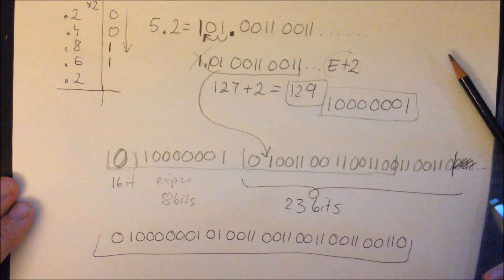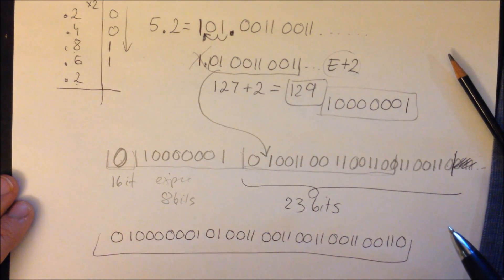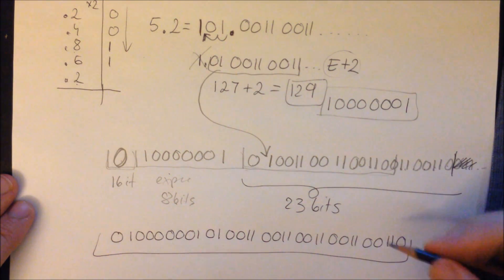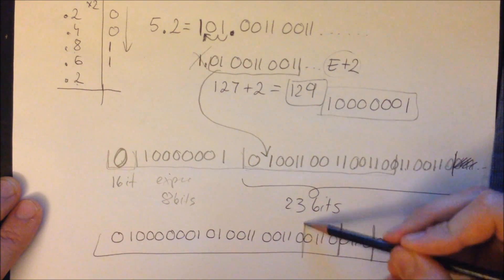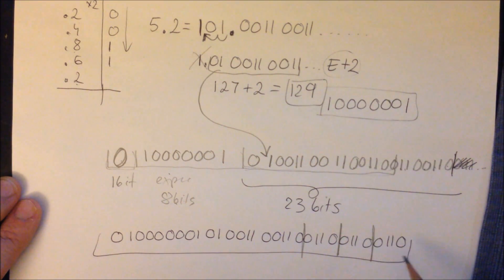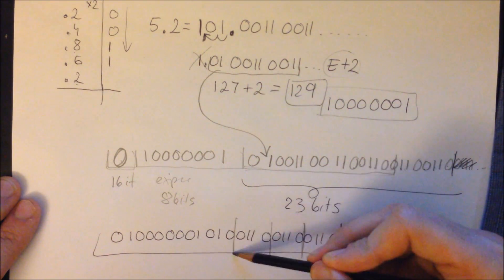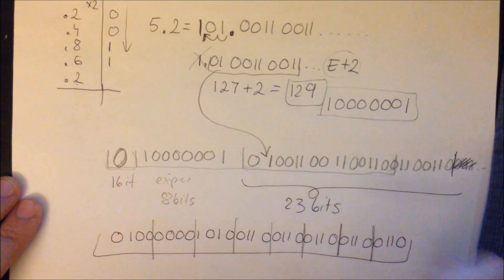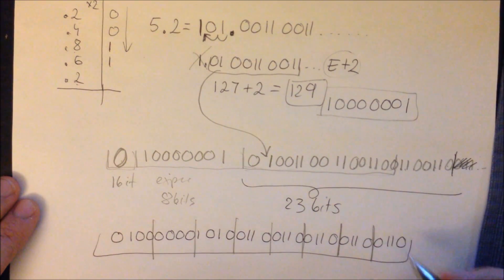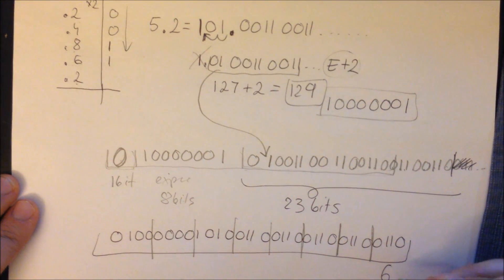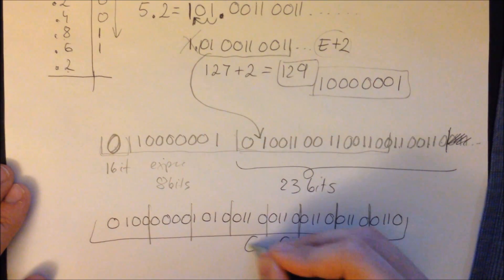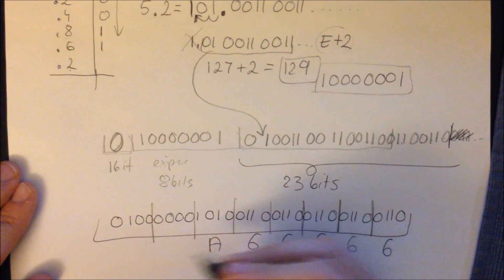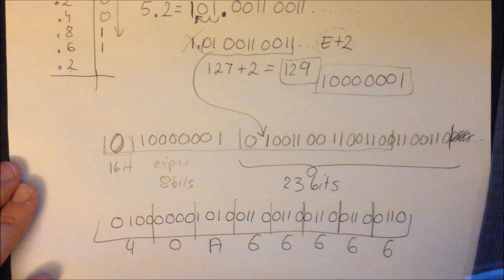So this is the floating point number in binary. We can now convert it to hexadecimal by dividing into groups of 4 bits. The groups give us: 0100, 0000, 1010, 0110, 0110, 0110, 0110, 0110. So the hexadecimal representation is 0x40A66666.